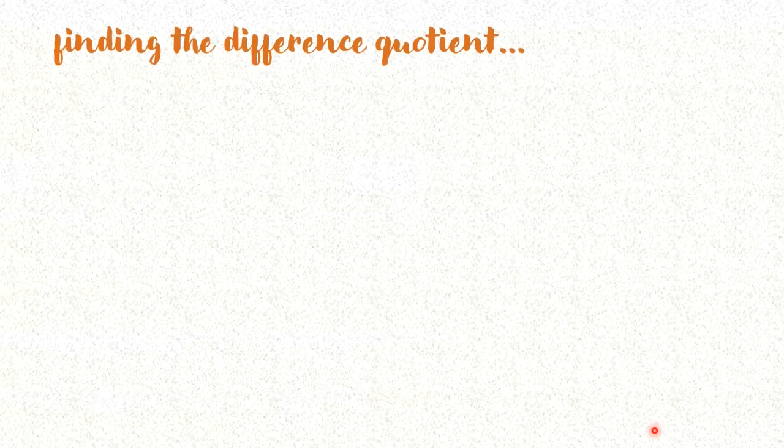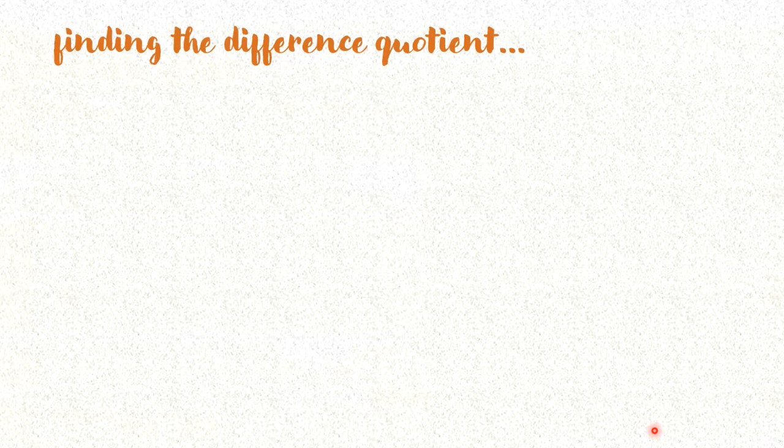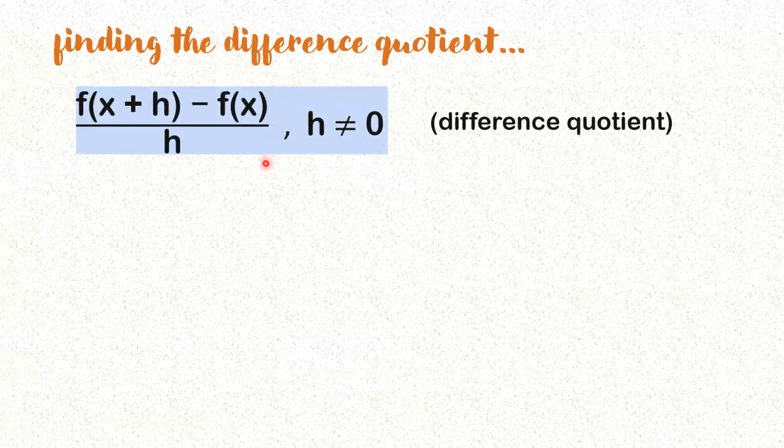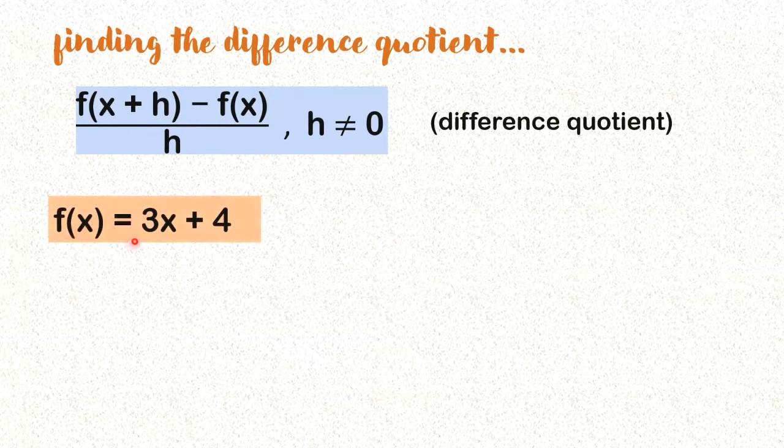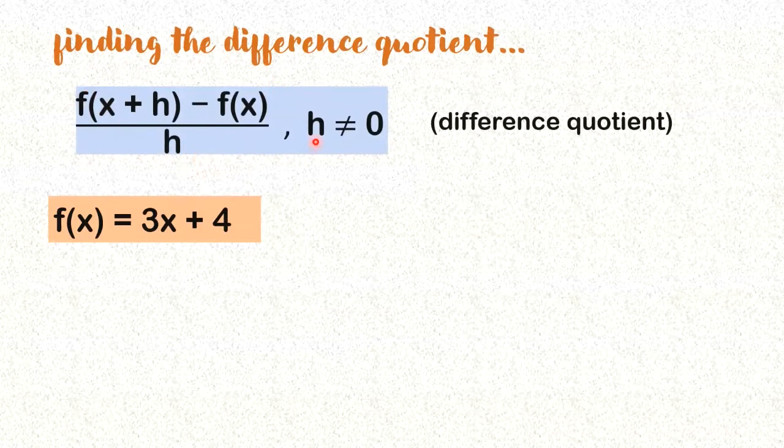Now, after dealing with some real-life situations, we try to find the difference quotient. What is the difference quotient? Here. This quantity, this expression that you see, this is what we call the difference quotient. Now, if you're given a function, so let's say f(x) equals 3x plus 4, and then you are going to find the difference quotient, you just use this formula. Note that h cannot be equal to zero, because the denominator cannot be zero, right?